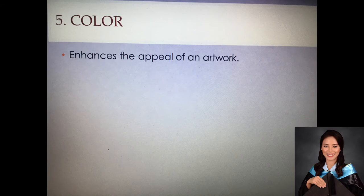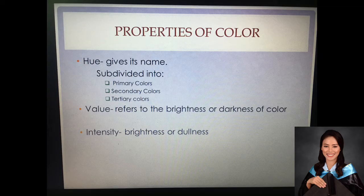Now, let's have the fifth element, which is color. Color is perhaps one of the elements that enhances the appeal of an artwork. You can really see life and beauty in artworks that have color. The color wheel corresponds to the first property of color. In the color wheel, we have this term: hue. This dimension of color gives its name. It can be subdivided into three: primary colors, secondary colors, and tertiary colors.